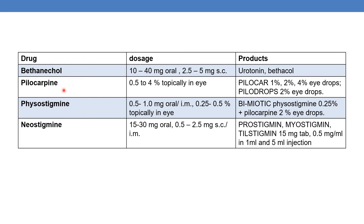The next is pilocarpine. It is available in the dosage form of 0.5 to 4% topically in eyes. Examples are pilocarpine 1%, 2%, 4% eye drops and Pilodrops 2% eye drops.